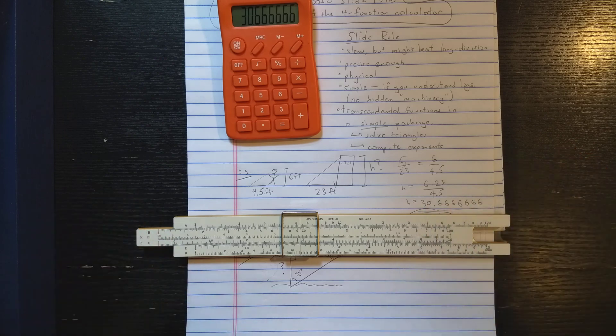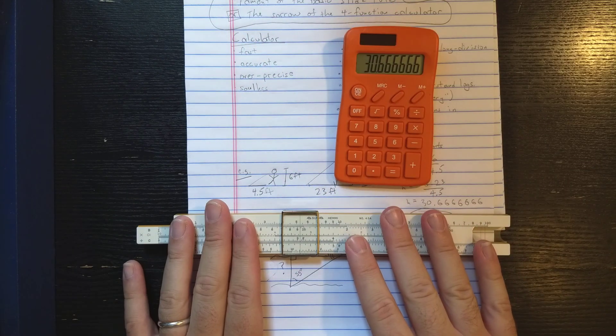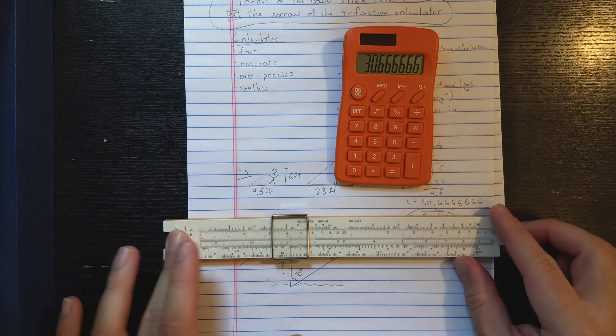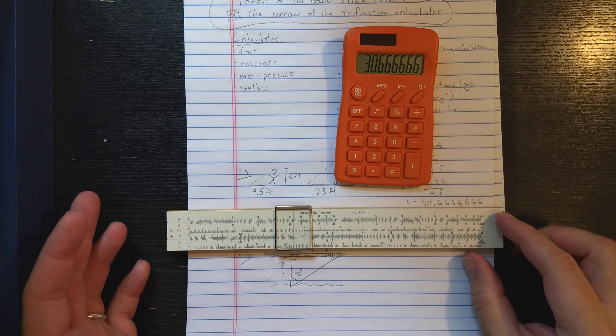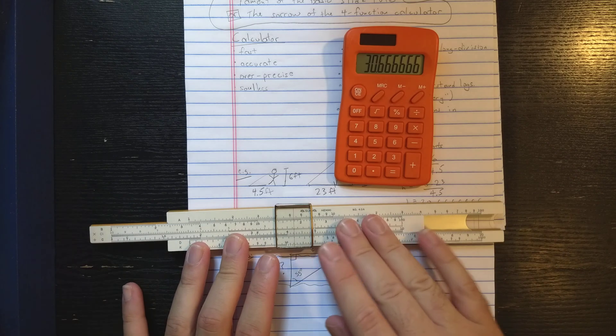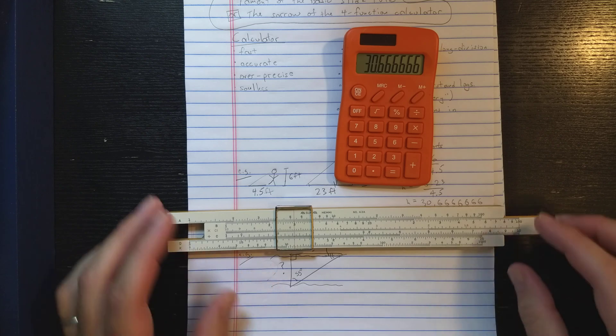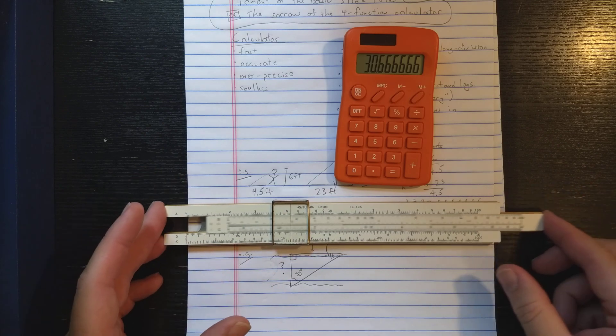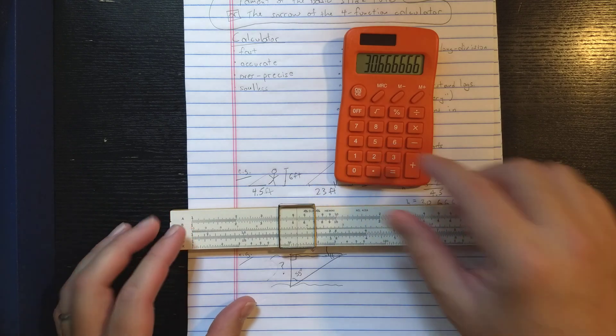So there's a little computation. So I think that the slide rule gives students maybe an increased appreciation for error and the importance of, well, you know, how significant really is my measurement, right? What kind of detail do I really have in my measurement? That's kind of lost on the calculator.